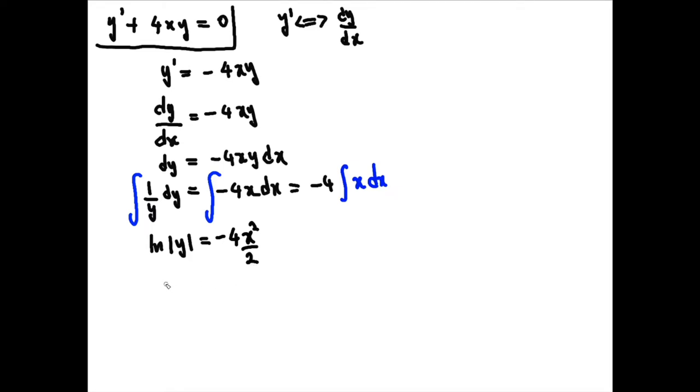And then finally we have ln|y| equals minus 2x squared. So now is the interesting part. Now we have to solve for y.